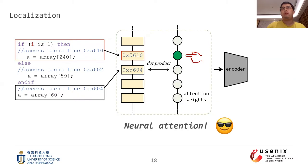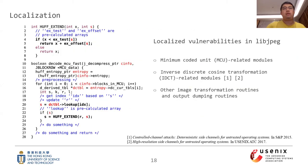We use neural attention to identify side-channel records that contribute most to reconstructing the image. The neural attention assigns each record an attention weight. By finding the records that have the highest attention weights, we can identify the most important ones. Here we show a code snippet of the vulnerable program point in libjpeg. In fact, we discover all side-channel leaks exploited in previous works and disclose many new vulnerabilities — most of them from the Huffman coding modules, the inverse discrete cosine transformation modules, and other image transformation and output dumping routines.